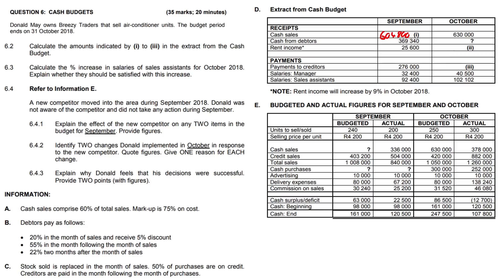Amount ii is rent income. The rent income is going to increase by 9%, so we take 25,600 in September and add 9% on top. That's 25,600 times 1.09, which gives us 27,904.